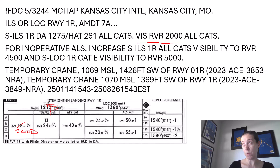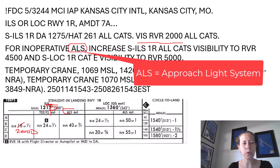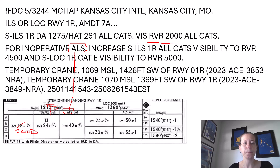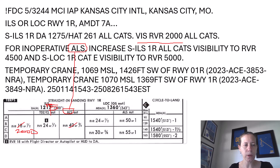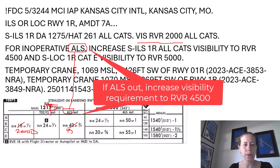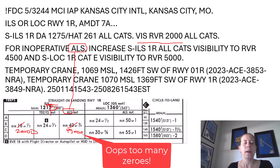Another piece of this NOTAM: for an inoperative approach light system — ALS — we have to increase the straight-in ILS visibility for all categories, A through D, to RVR 4,500. So now this goes to RVR 4,500.